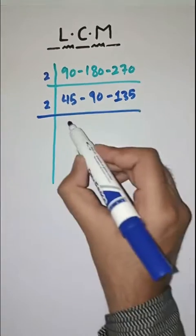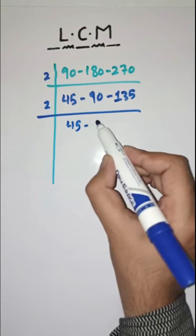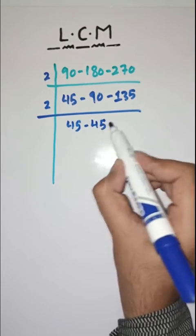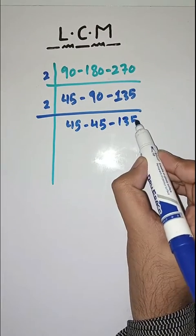Again with 2. Dividing by 2 again, we get 45 (unchanged), 45, and 135 (unchanged).